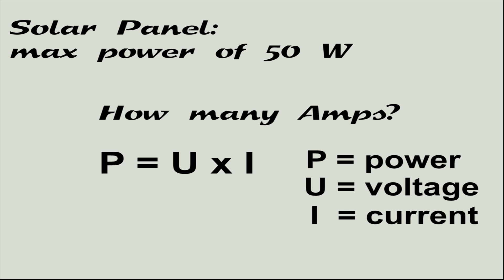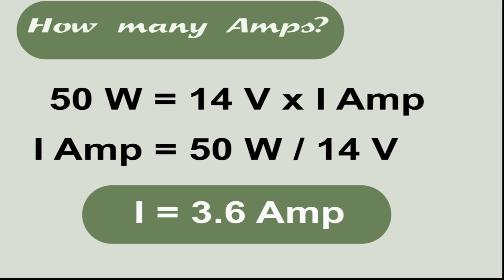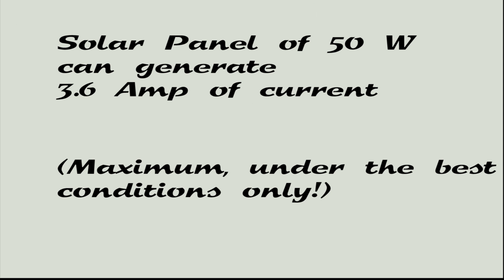Power equals voltage times current. In our case the panel provides 50W at around 14V. Hence 50 divided by around 14V equals 3.6A. Now we know that our panel generates 3.6A.